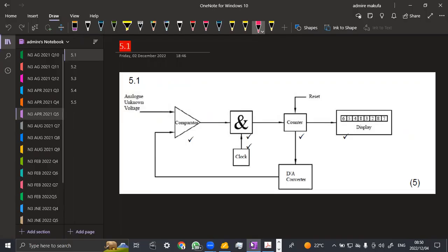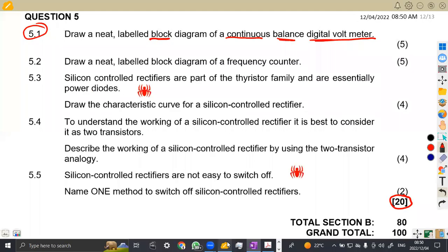Then we've got the clock here. That is where we are going to have everything being interchanged to the counter, then to the display. That is the reset. And we've got the DA converter there. So that is the block diagram. I think everything was clear there.